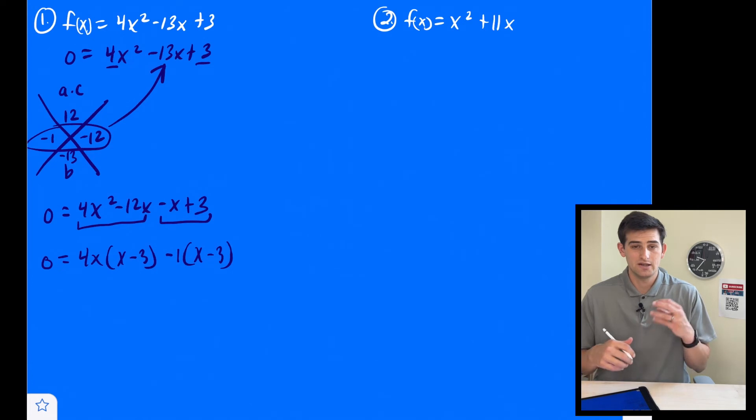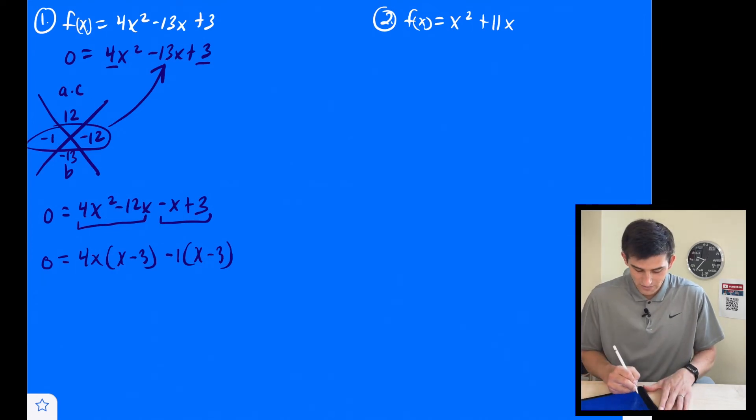And I'm going to factor out a negative one to get x minus three. So the goal here is to get the same term in parentheses. And we did that, we got x - 3. And that is called our common binomial. So now we can factor that out. So now we can write this as 0 = (x - 3)(4x - 1).